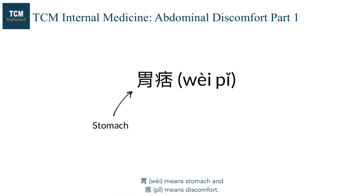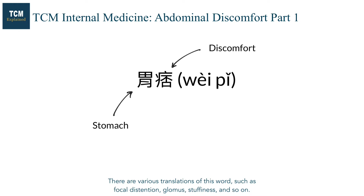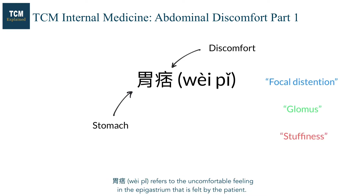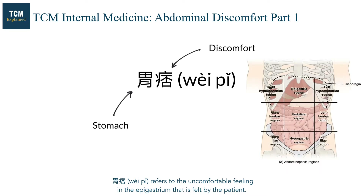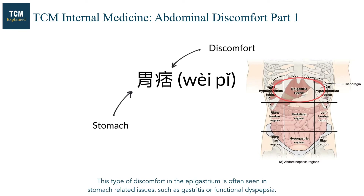Wei means stomach and Pe means discomfort. There are various translations of this word such as focal distension, glomus, stuffiness, and so on. Wei Pe refers to the uncomfortable feeling in the epigastrium that is felt by the patient, but when we press the area, we find it soft and there's not much resistance. This type of discomfort in the epigastrium is often seen in stomach-related issues such as gastritis or functional dyspepsia.